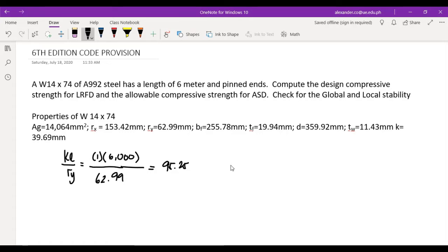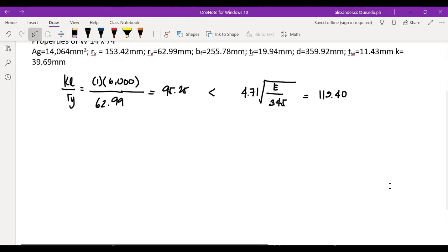Okay, now instead of comparing to C sub C, we will compare this with 4.71. This is now the C sub C or the column constant: 4.71 times square root of E over Fy. The Fy here, the E is 200,000. We have that memorized. The F sub Y, since A992, not 248, but A992, the Fy is 345. You should memorize this by heart. And the answer is 113.4.